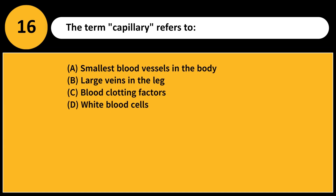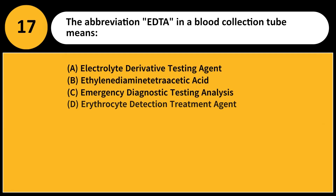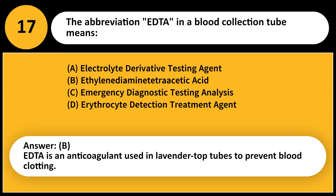The term capillary refers to: A. Smallest blood vessels in the body B. Large veins in the leg C. Blood clotting factors D. White blood cells. Answer: A. Capillaries are tiny blood vessels where oxygen and nutrient exchange occurs. The abbreviation EDTA in a blood collection tube stands for ethylenediamine tetraacetic acid — an anticoagulant used in lavender top tubes to prevent blood clotting.